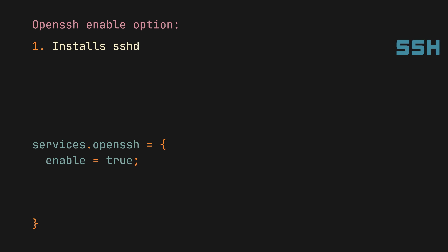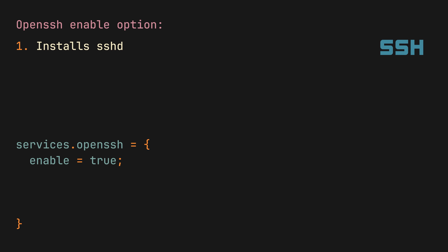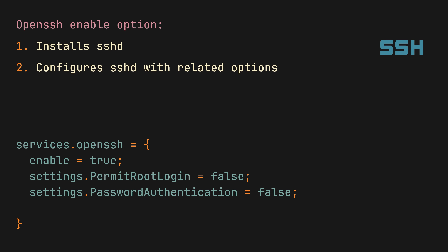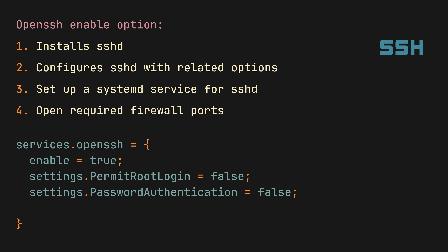But if we take a look at something like services.openssh, it gets even more interesting. Because other than installing SSHD and configuring it with related options, this one will not only set up and enable a systemd service for you, but also open the required firewall ports. These ports can of course be configured using a related option, which will influence both the ports that SSHD listens to and the firewall ports opened by the option. As a user, you don't have to think about what happens under the hood — your job is simply choosing the end result, and NixOS will do everything required to deliver that end result to you.